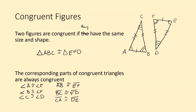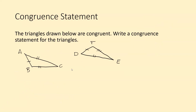Even without a picture, we can come up with the correct congruent part statements. If the statement were written incorrectly — for example, triangle ABC congruent to triangle DEF when that ordering is wrong — you would not be able to identify the correct corresponding parts. That is why it is important to write your congruent statement in the right order.